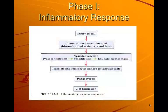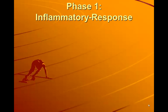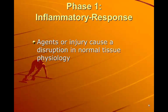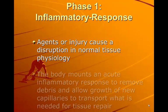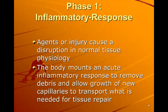Phase one. This is a diagram of what I'm going to explain in the later slides. The first thing that happens is agents or injury cause a disruption in normal tissue physiology — this is your injury. The body mounts an acute inflammatory response to remove debris and allow growth of new capillaries to transport what is needed for tissue repair.